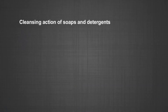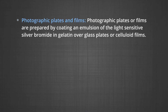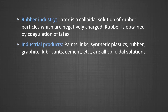Number five, cleansing action of soaps and detergents: this has already been described in module three. Number six, photographic plates and films: photographic plates or films are prepared by coating an emulsion of the light-sensitive silver bromide in gelatin over glass plates or celluloid films. Number seven, rubber industry: latex is a colloidal solution of rubber particles which are negatively charged. Rubber is obtained by coagulation of latex. Number eight, industrial products: paints, inks, synthetic plastics, rubber, graphite, lubricants, cement, etc. are all colloidal solutions.